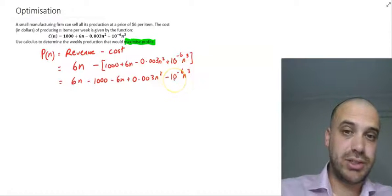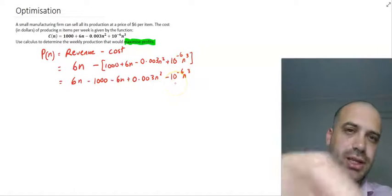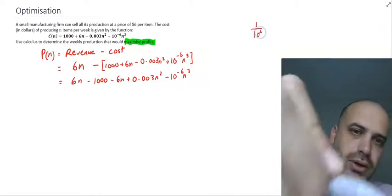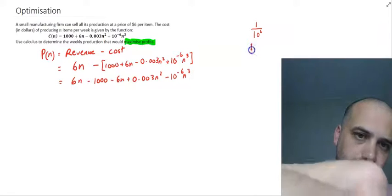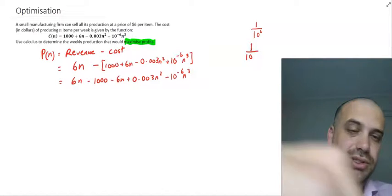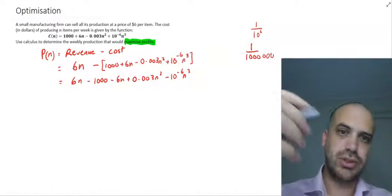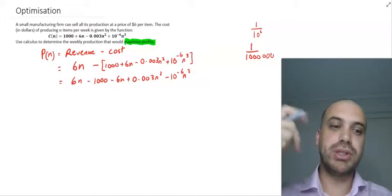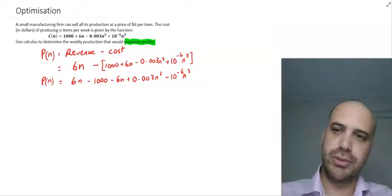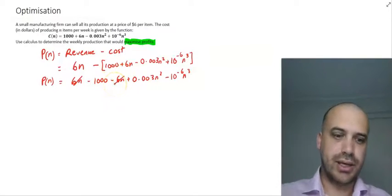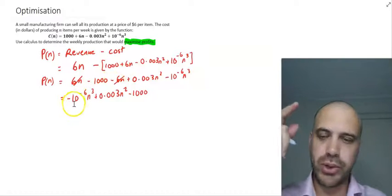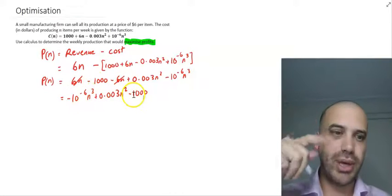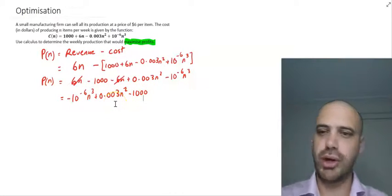Now just talking about this 10 to the negative 6 for a moment, so you don't get confused. 10 to the negative 6 is the same as 1 over 10 to the 6, which is 1 over 1 with 6 zeros. So it's a small number, 1 over 1 million, which is 0.00001. We can simplify this a little bit because the 6n minus 6n cancels out. I've also written it in a different order because it makes sense to have the n cubed first, the n squared second. There's no n term, but then the constant at the end. That's generally how we write polynomials.